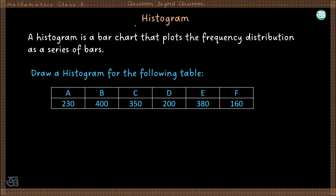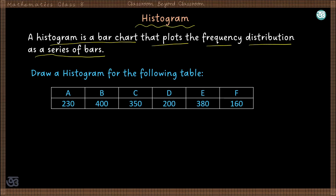Now let us discuss the histogram. It is a type of bar chart that plots the frequency distribution as a series of successive bars. The key difference is that there is no space between two rectangular bars, and that type of bar chart is called a histogram.